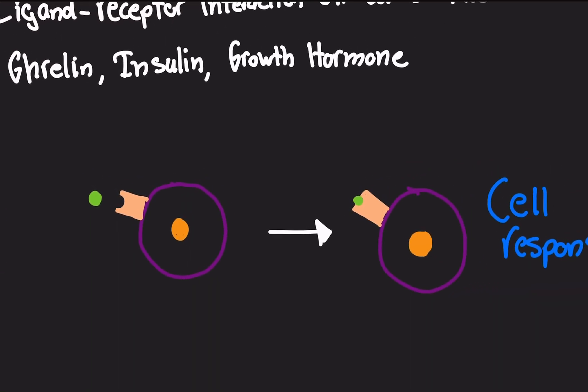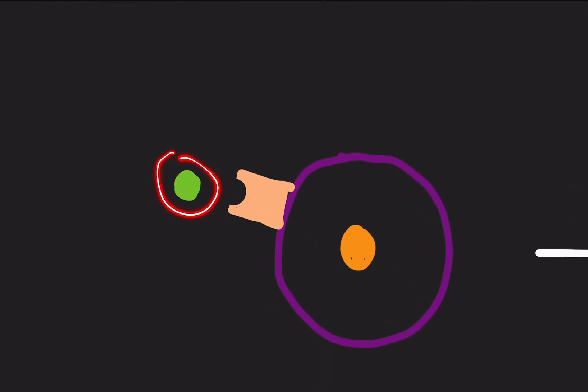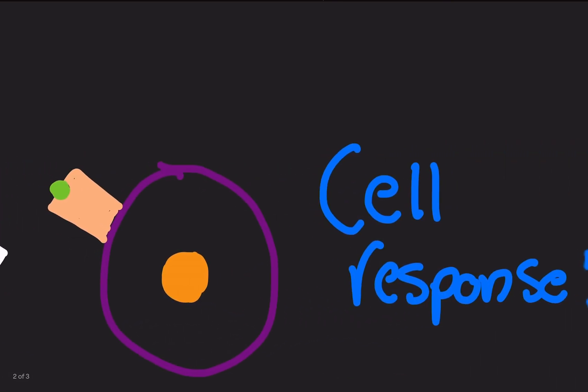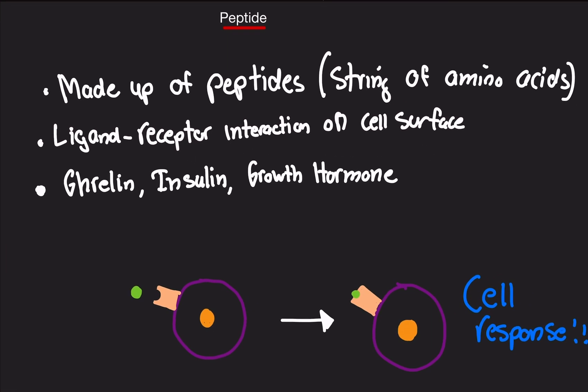So what are these hormones we're talking about? Something like ghrelin. Ghrelin is your hunger hormone. This is what tells your body you're hungry. Insulin to combat sugar, and growth hormone. So let's take an example here. Say this is a ghrelin hormone. It binds to the receptor, and now we get hungry. That's our cell response. We're hungry now. That's how that works. Pretty simple.